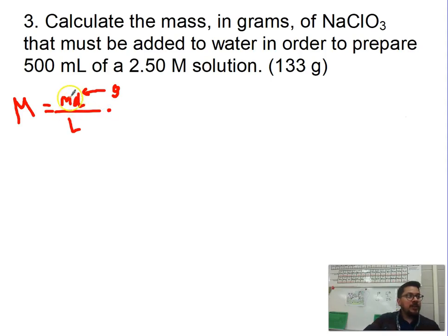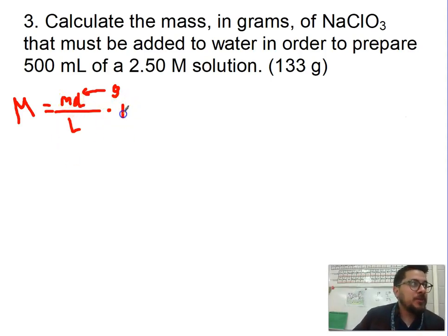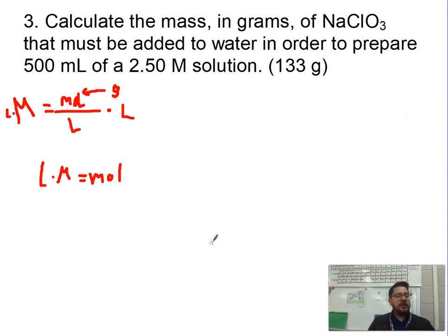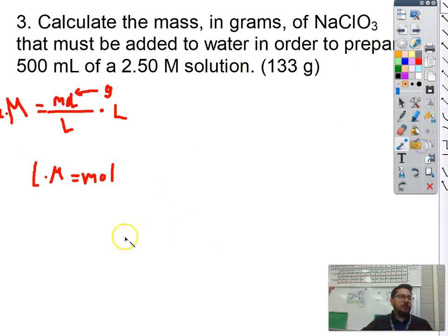To solve for moles, I need to get rid of the liters in the denominator. I'm going to multiply both sides by liters, so: liters times molarity equals moles. There are my numbers and there's the equation I'm going to be using. Let's make a table to solve this problem.